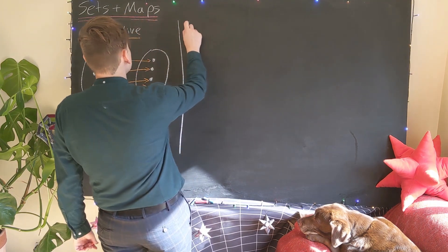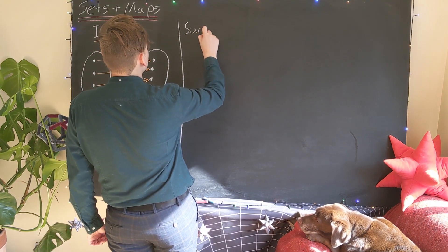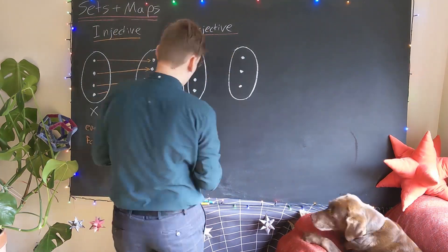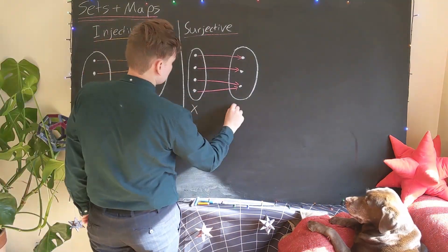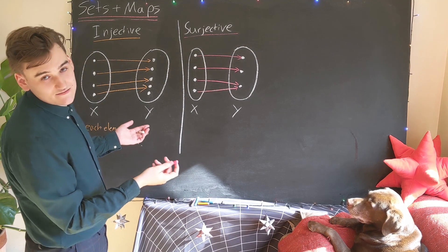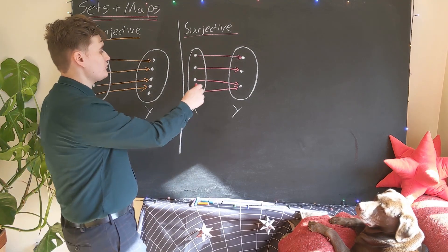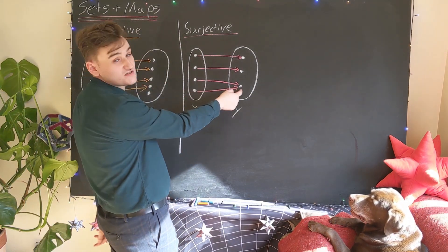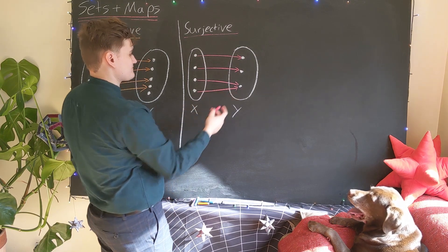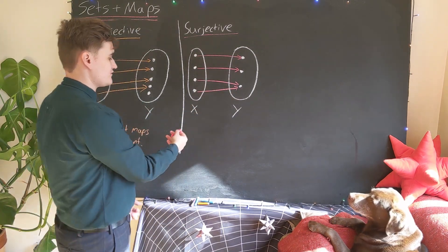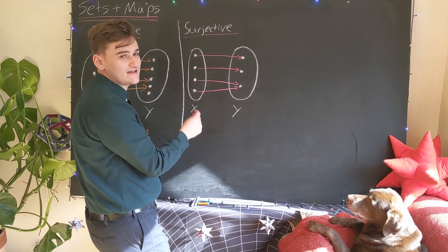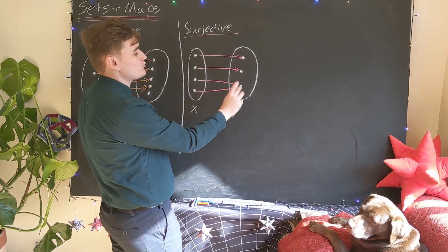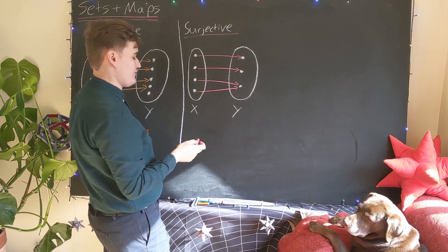Another type of map is called surjective. In the surjective case, two elements in the domain can map to the same element in the codomain. The key point for being a surjective map is that every element in the codomain is mapped to by at least one element in the domain.